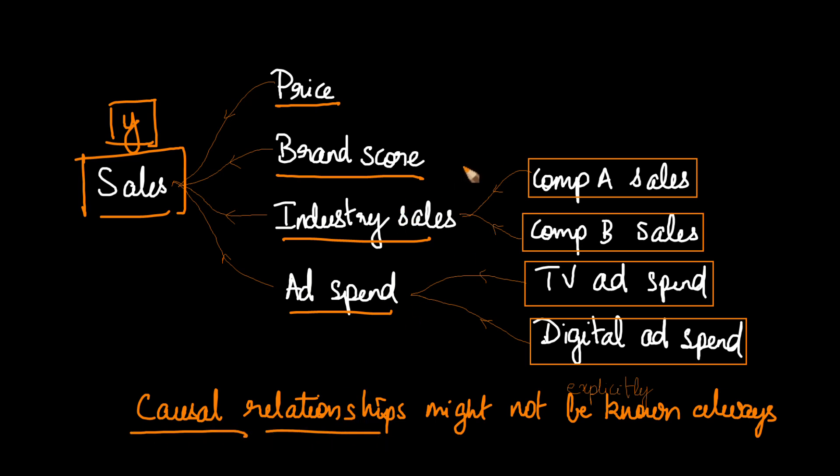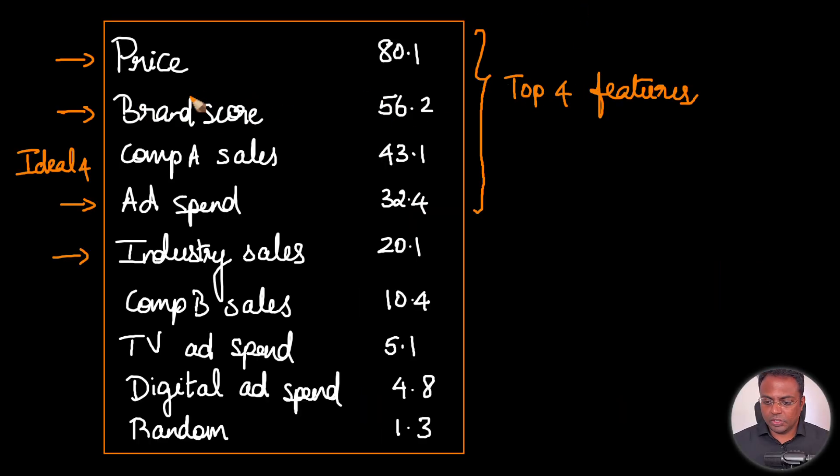To be clear, for example, this is your feature importances. After building the model, you get feature importances. It is not like, okay, we will get the top four features from the feature importances and use those features to build your further model. From this, we know that price, brand score, ad spend and industry sales are sort of the core variables. Now, if it was an algorithm like Boruta, it will select all of these variables.